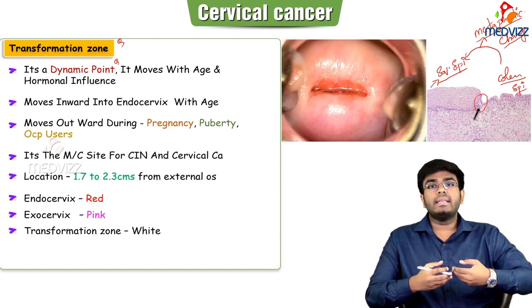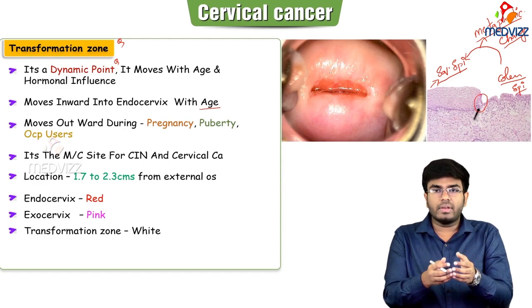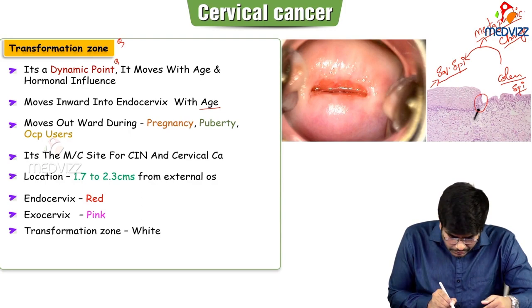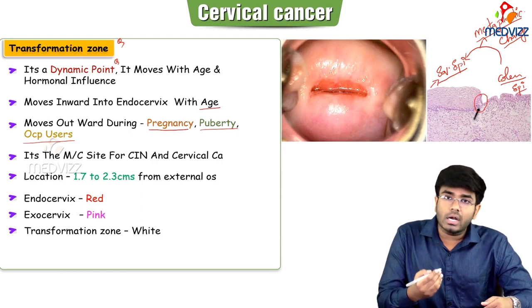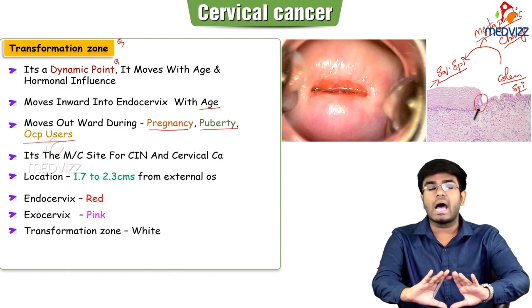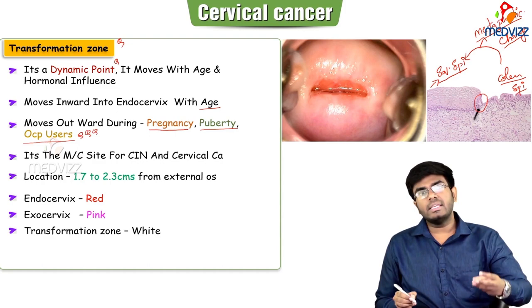With increasing age, this transformation zone will be taken in — sucked into the cervix. But during pregnancy, puberty, and with the usage of oral contraceptive agents, this transformation zone is more likely to be exposed outward. So it moves outward with pregnancy, puberty, and OCP drug usage.